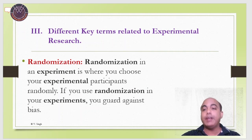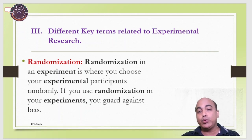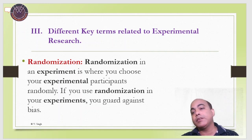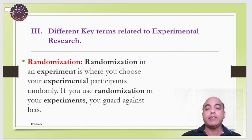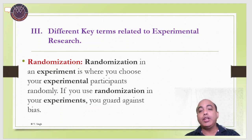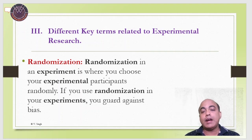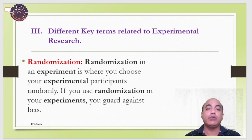Randomization in an experiment means choosing experimental participants randomly. Using randomization guards against any type of biasness. When assigning and selecting members to two or more groups, we must ensure participants are assigned to experimental or control groups randomly, so we can say both groups were equivalent before the experiment begins. This increases both the internal and external validity of the research findings.